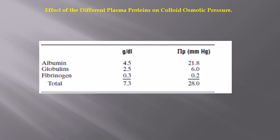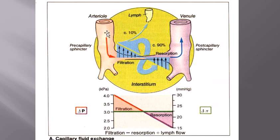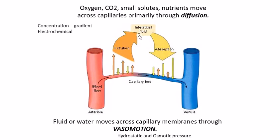At the arterial end, filtration forces favor net filtration, whereas at the venous end there is net reabsorption. When blood enters the capillaries from arterioles and metarterioles, there is net filtration; as blood passes through the venous end, there is net reabsorption — fluid goes outside at the arterial end and returns inside at the venous end. At the arterial end the concentration gradient is toward the interstitial fluid, and at the venous end it is toward the interior of the capillary.